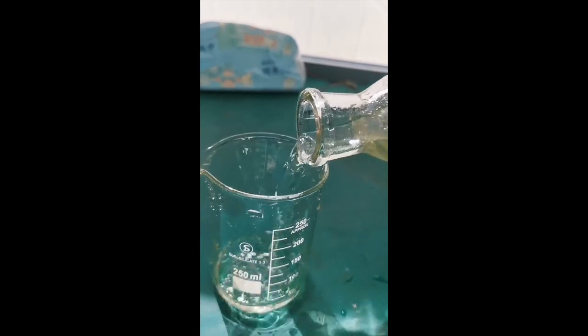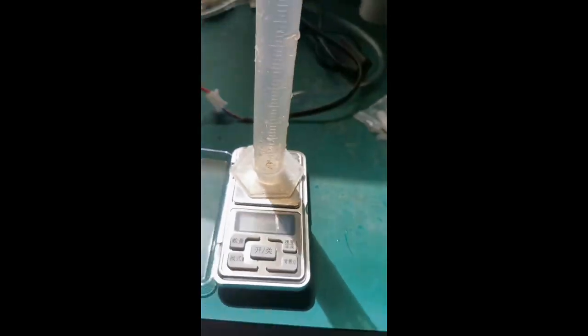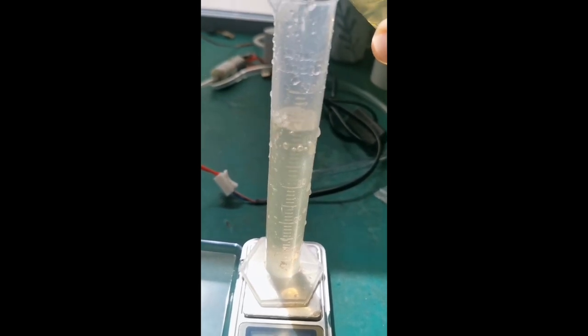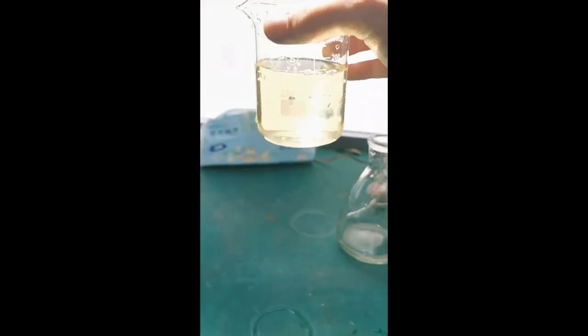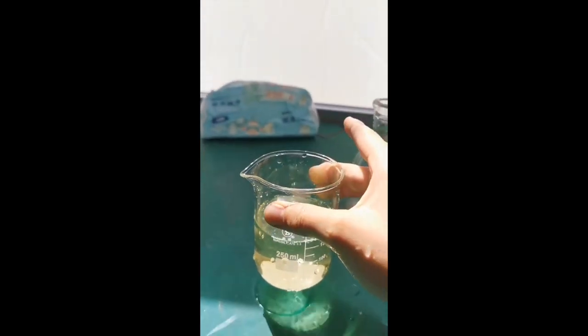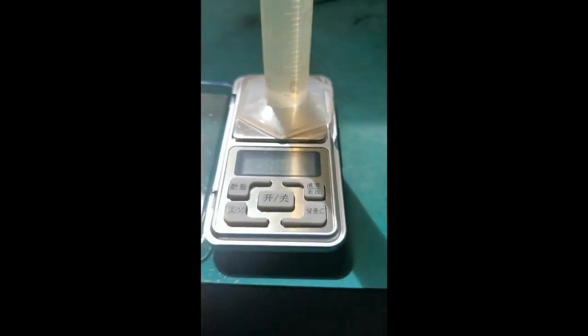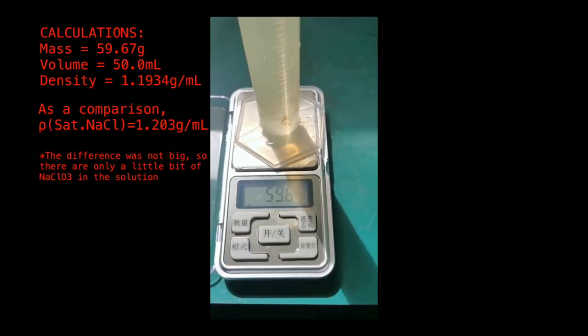I poured the filtrate into a beaker, and it was about 150 milliliters. I measured out 50 milliliters of the solution and took accurate mass measurements. However, I accidentally spilled the solution on the table. Later, I was able to recover a portion using tissue papers, but unfortunately I lost about 30 milliliters of the solution. So I just did the measurement again, and this time I fortunately did not spill it. The mass of the solution was 59.67 grams, which corresponds with a density of 1.1934 grams per milliliter.